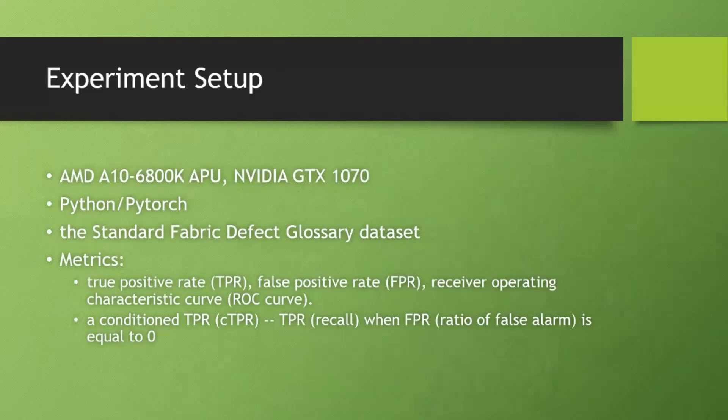I have to introduce the metric used here. We use a metric called Conditioned True Positive Rate, or CTPR. TPR is originally called recall, but here the condition is that CTPR is the TPR or recall when the false positive rate — the ratio of false alarms — is zero. The rationale is that we want to make sure our system does not misclassify normal fabrics as defective, because defects are still rare compared to normal fabrics and misclassifying normal into defective would result in significant economic costs.